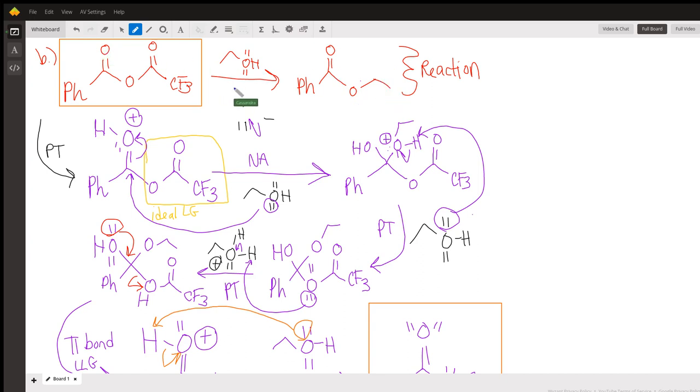And what's not shown is our side product being that CF3 off of that carbonyl, which ultimately would be the removed leaving group. So how does this end up happening?